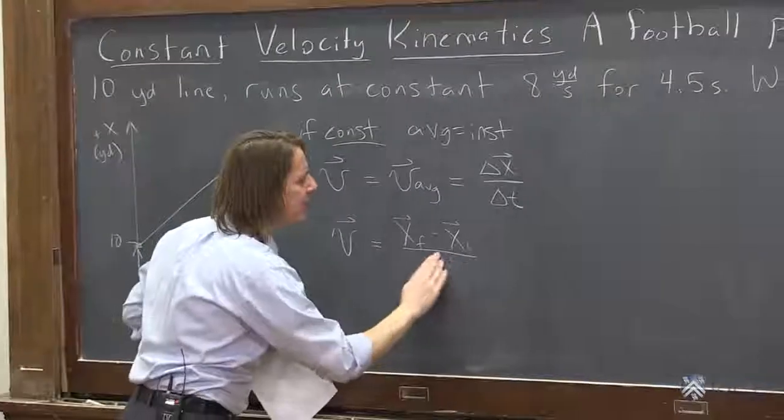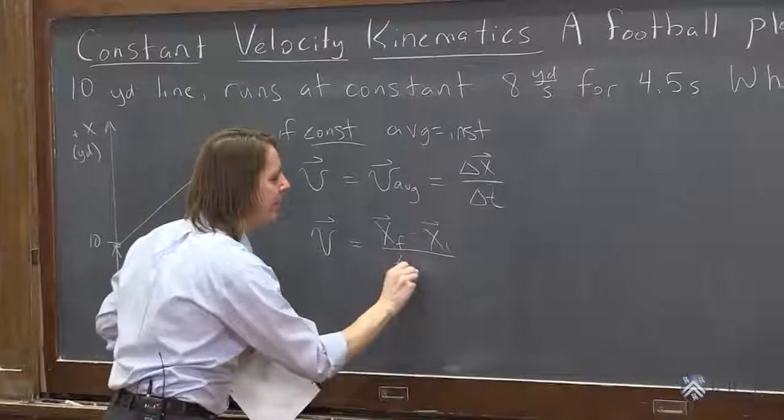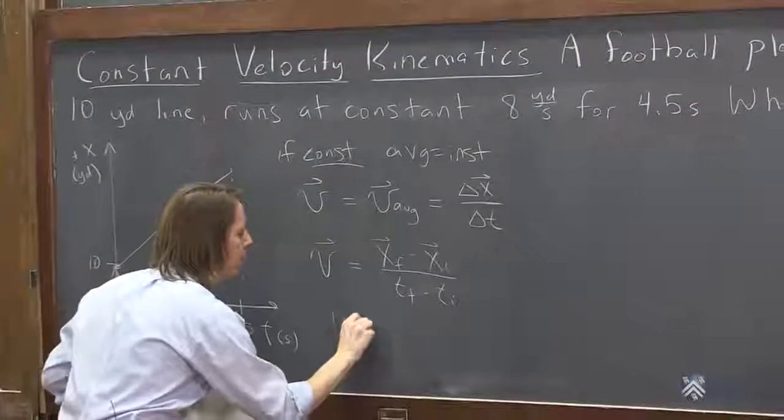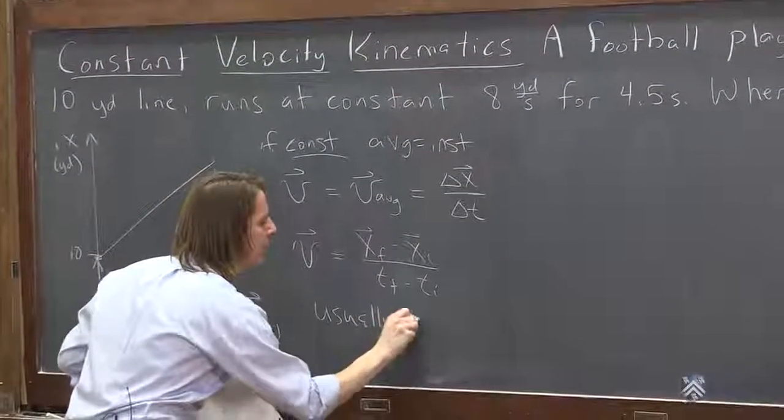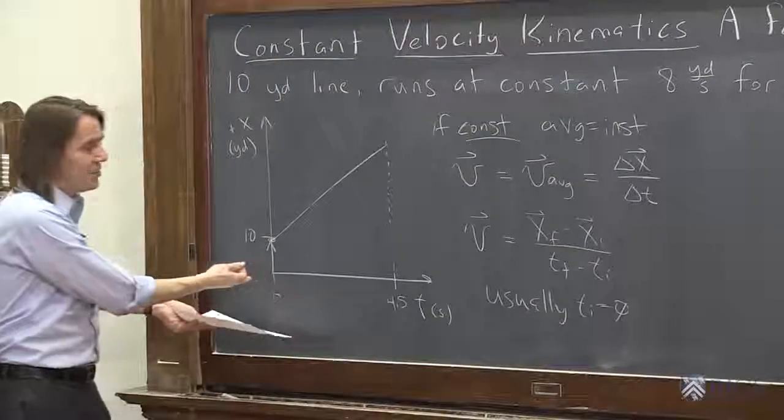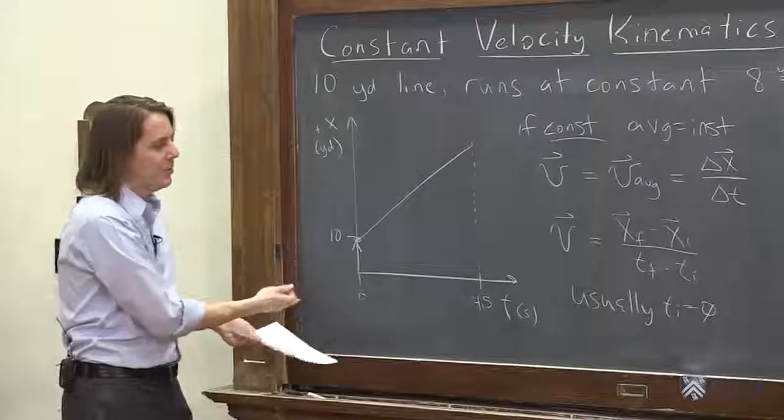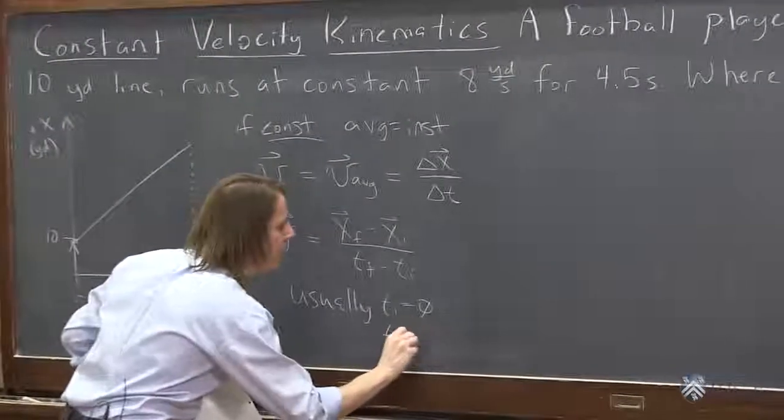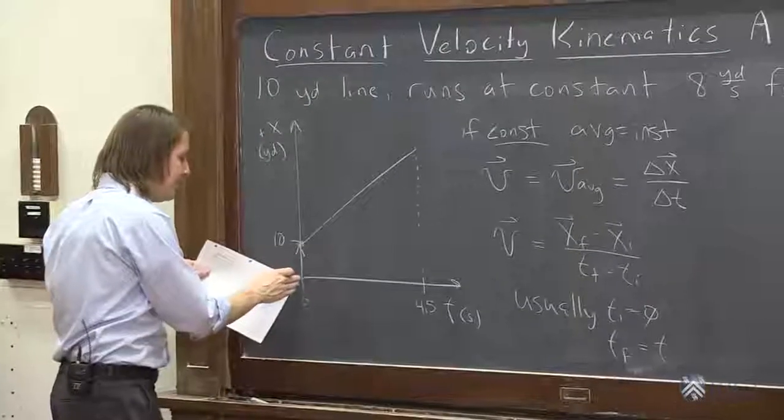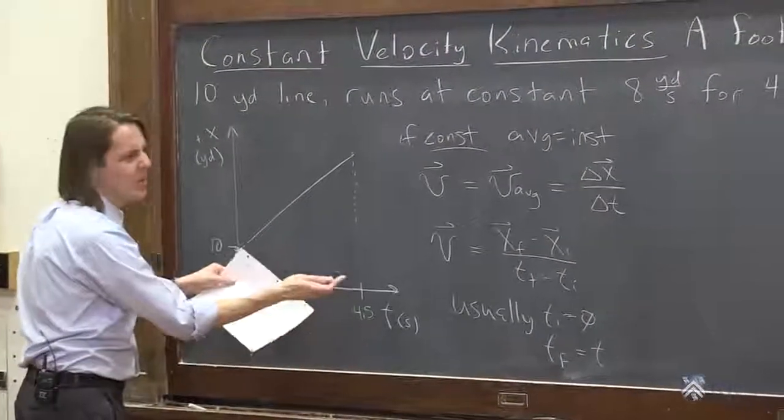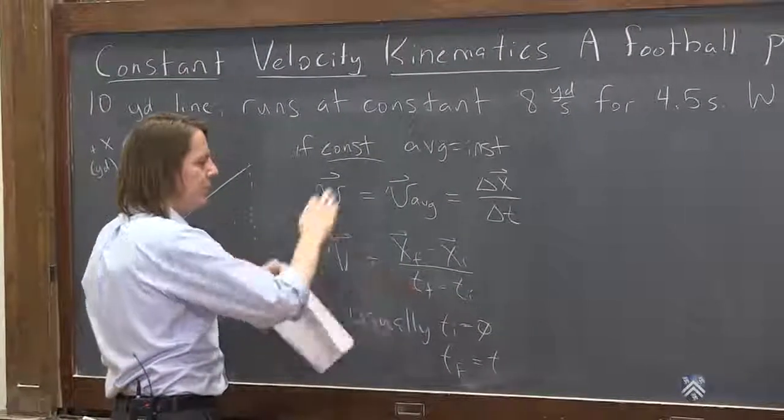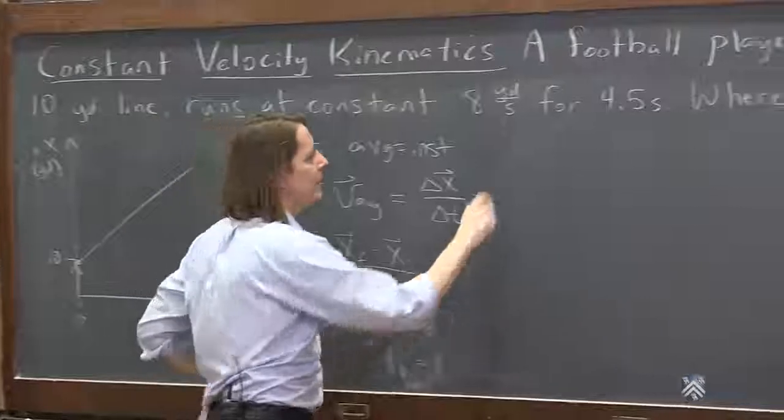So down here, also delta t, I should have written as time final minus time initial. So I could point out usually time initial is just 0. We're going to put something at the origin. It's usually ti, initial time is 0. And then usually tf we just call t. We're usually going from time equals 0 to some time t. That's how we would usually write it. So if we get rid of that and just call that t, and then start switching things around, we can solve for xf.